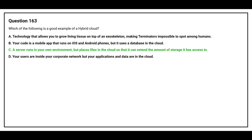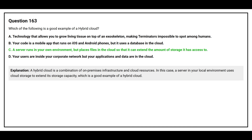The correct answer is Option C. A server runs in your own environment but places files in the cloud so that it can extend the amount of storage it has access to. A hybrid cloud is a combination of on-premises infrastructure and cloud resources. In this case, a server in your local environment uses cloud storage to extend its storage capacity.